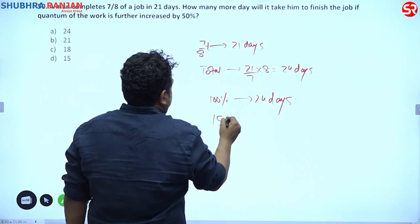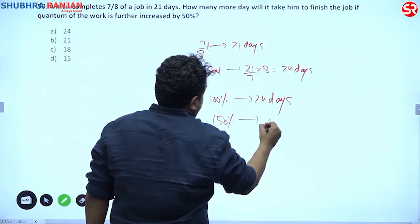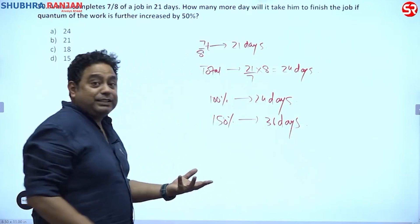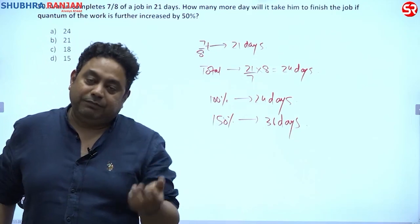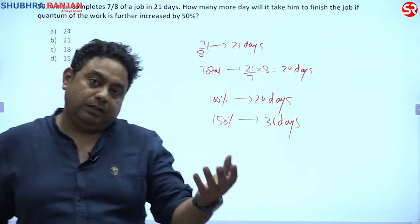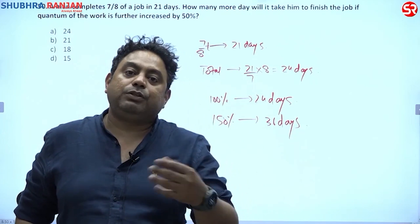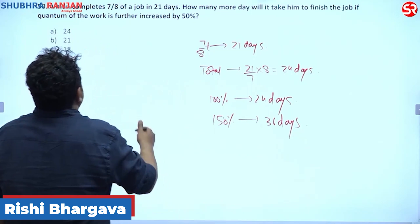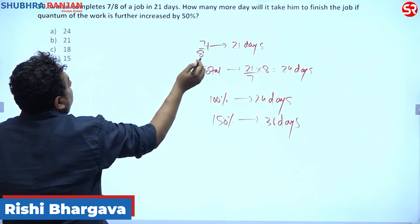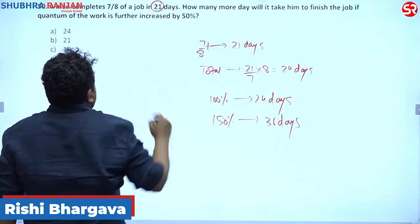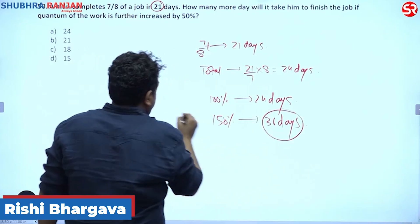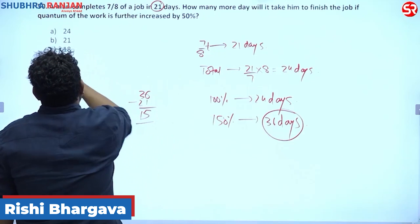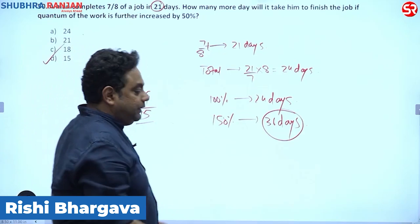With a 50% increase, the total work becomes 150%, which takes 24 + 12 = 36 days. Since 21 days have already been completed, the remaining days required are 36 − 21 = 15 days.